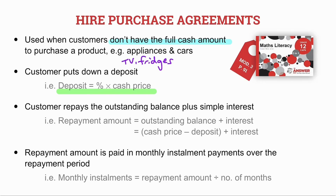The customer will then repay the outstanding balance plus simple interest that has accrued. Remember, you can only be charged interest on the amount you haven't paid. So the formula for repayment amount equals the outstanding balance plus the interest.